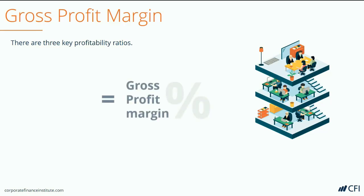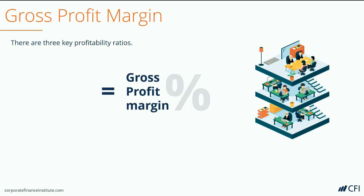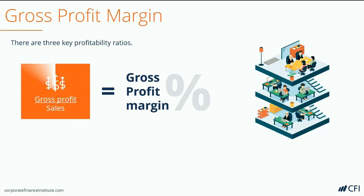The first one is gross profit margin. Gross profit margin can be calculated by taking the gross profit and dividing it by the sales. To get gross profit, we take the revenue and subtract cost of goods sold or cost of sales. This ratio tells us, for every one dollar of revenue that was generated, how much is left over after paying the cost of sales or the cost of goods sold. The higher this number is, the better.